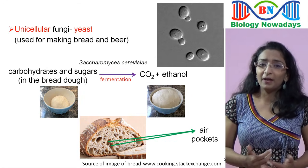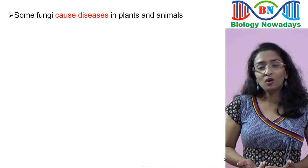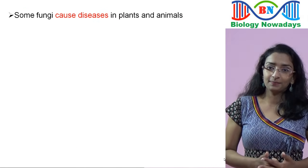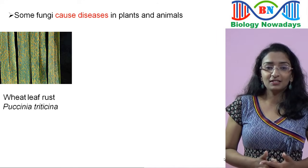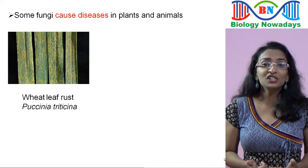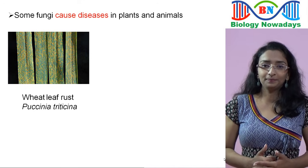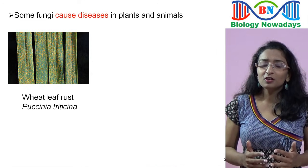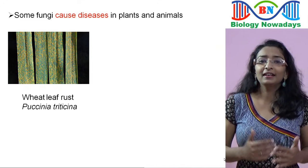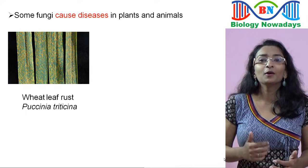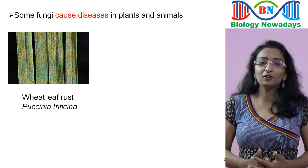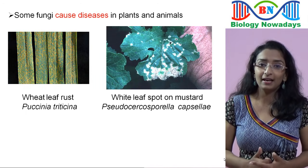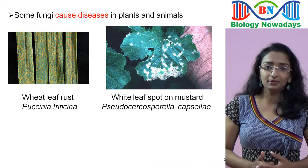Some fungi are pathogenic, causing diseases in both plants and animals. Wheat leaf rust caused by Puccinia triticina is an example. This disease is called rust because of its rust-like appearance. White leaf spot on mustard caused by Pseudocercosporella capsellae is another example.